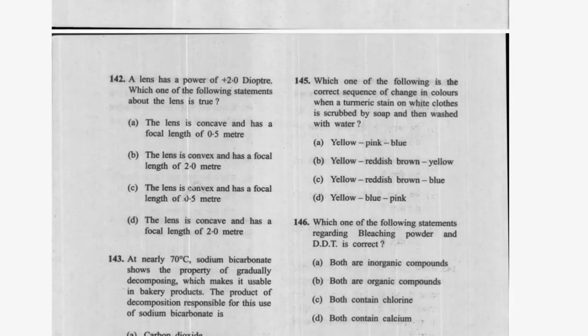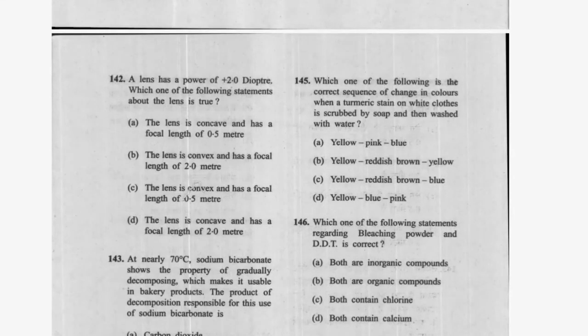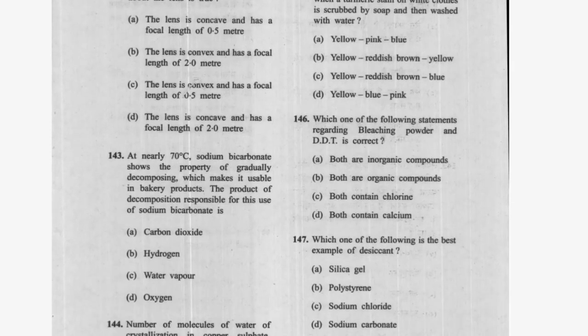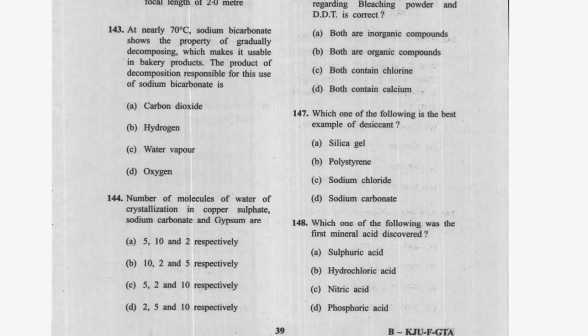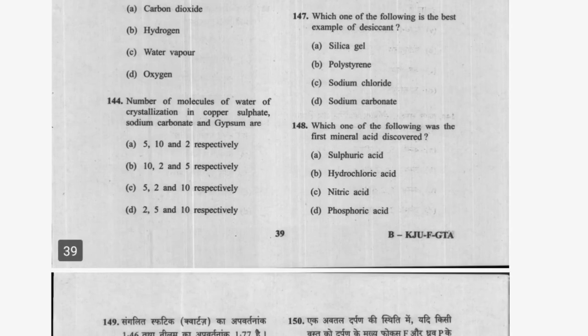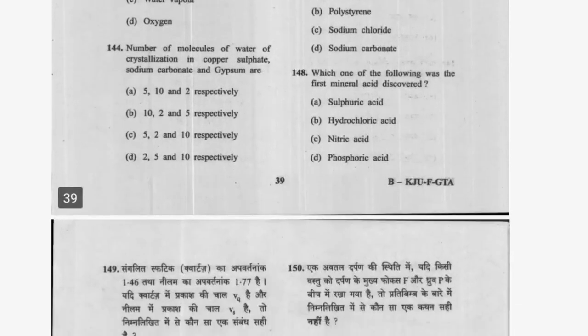Question 135: What is the correct sequence of color change when turmeric stained on a white cloth is scrubbed with soap and then washed with water? Yellow, reddish-brown, yellow — option B is correct. Question 136: Which statement about bleaching powder and DDT is correct? Both contain chlorine — option C. Question 137: The best example of a desiccant is silica gel — option A. Question 138: The first mineral acid discovered is sulphuric acid — option A.